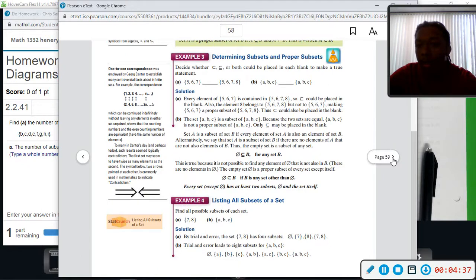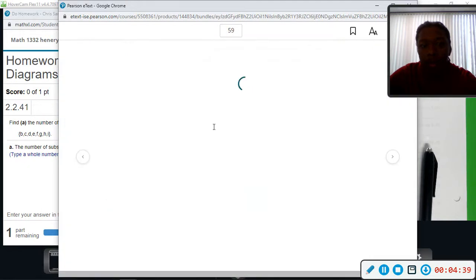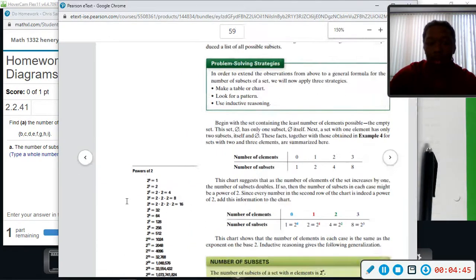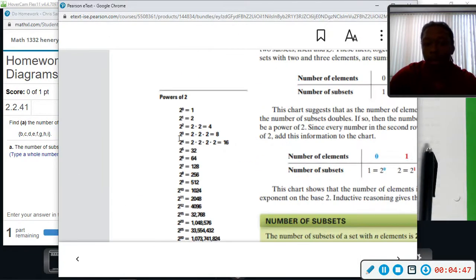Proper subsets. And then here's that table I was wanting to mention. Let me see if I can zoom in. Okay, so 2 to the 8th power, 256. Okay, so this is a power of 2 table that kind of shows you several of those.